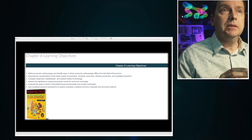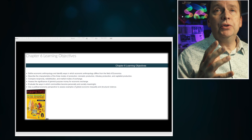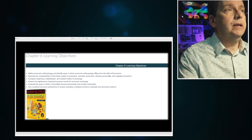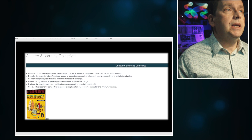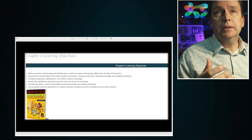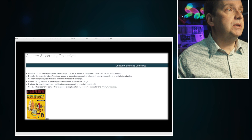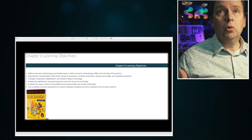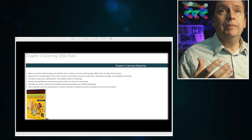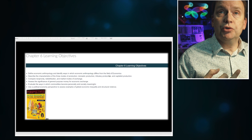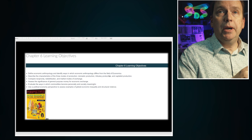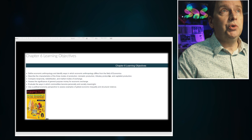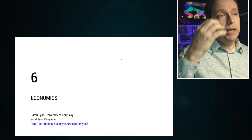Chapter six on economic anthropology connects back to chapter five and forward to chapter seven — think of them as a triad. Economic anthropologists look at how people produce, exchange, and consume material objects, and the role of immaterial things like labor, services, and knowledge. We'll discuss modes of production, reciprocity, redistribution, and market-based economies, ending on global inequalities and how capitalist production impacts people through alienation and social stratification.